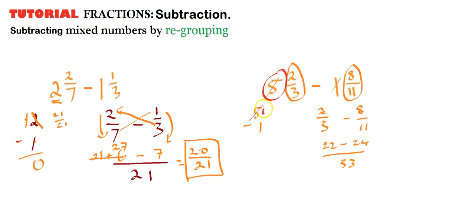So we need to grab a whole from this whole number. So that becomes a 4. We're dealing with 33s. And so a whole is now 33 over 33. So we're going to add 33 here to the 22. So now this becomes 55.